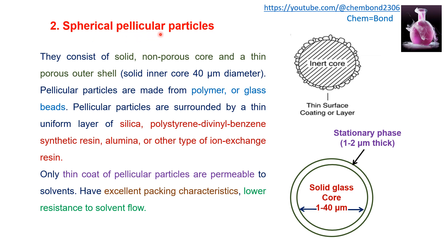The second packing material type is spherical pellicular particles, which consist of a solid non-porous core coated with a thin porous outer layer, with diameters up to 40 micrometers. The core is made from polymers or glass beads, surrounded by a thin coating layer of silica, polystyrene, divinyl benzene, synthetic resin, alumina, or ion exchange resins. Unlike silica microporous particles where the whole particle is porous, in pellicular particles only the thin outer porous layer is permeable to solvents.